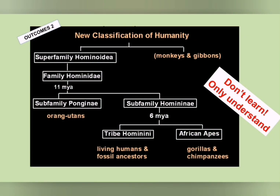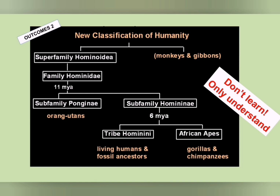The classification of hominids is a big area of debate. If you look at this flowchart, it's a family pedigree of the evolution of man — but note it says don't learn it, only understand it. So if you get given a diagram like this in an exam, you just need to be able to interpret what's going on. Reading from top to bottom, where the blue arrow is, the line goes down and then splits into two. That blue arrow represents the common ancestor of monkeys, apes, and modern humans.